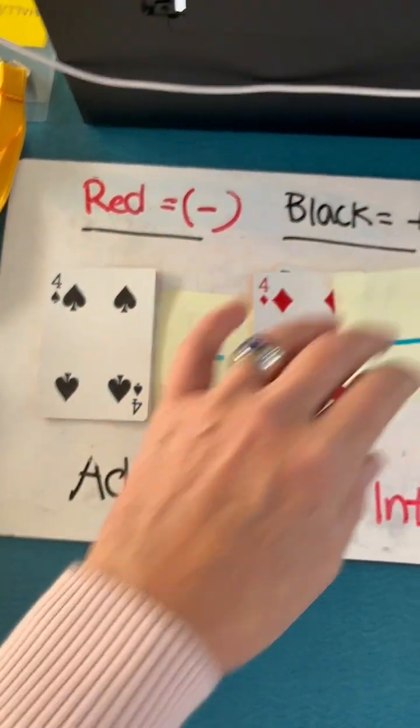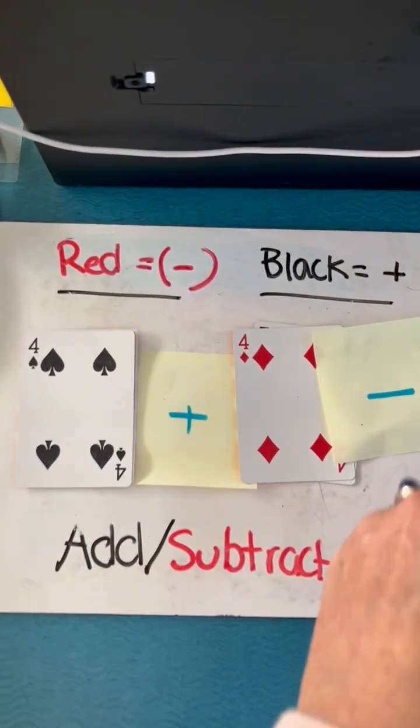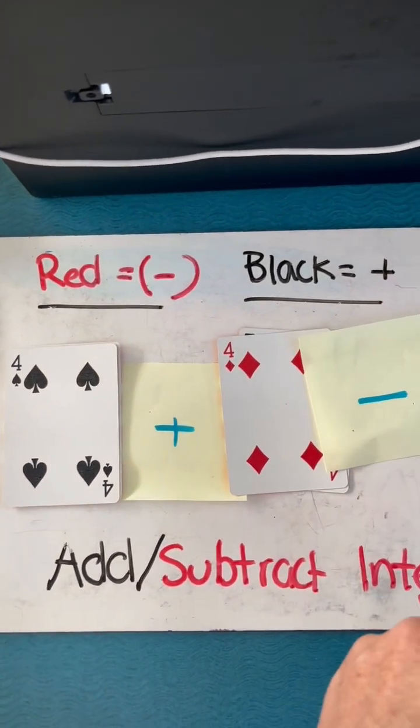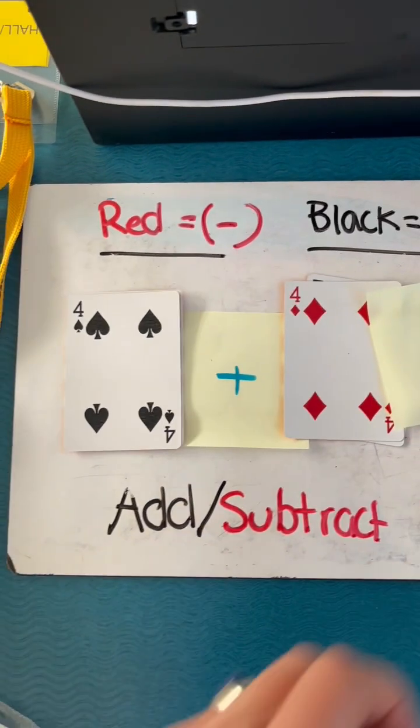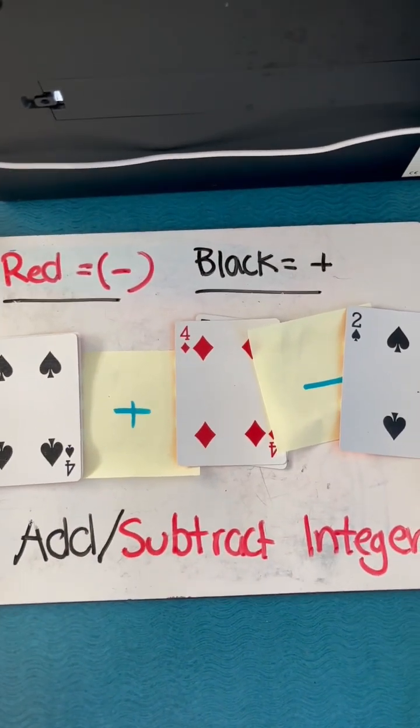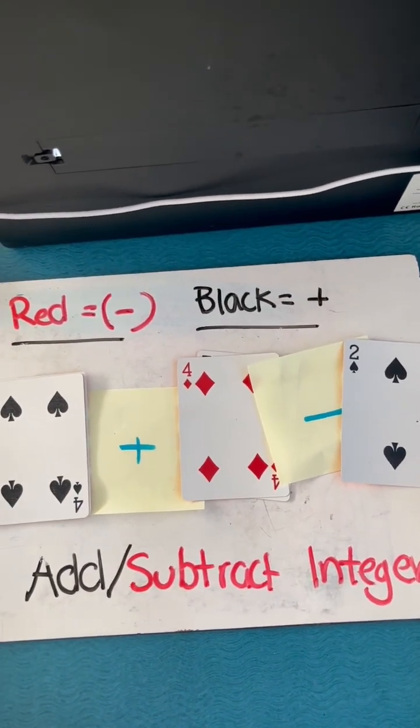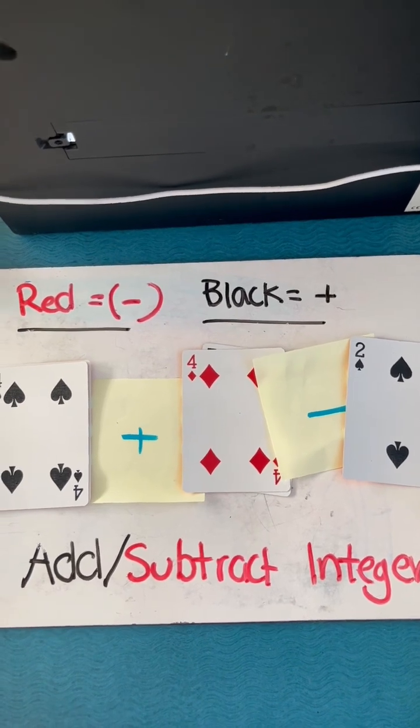I can have them write an equation with 3 values. So we see here, we have positive 4 plus a negative 4, it's going to give me a 0. And 0 minus positive 2 is going to give me an answer of negative 2.